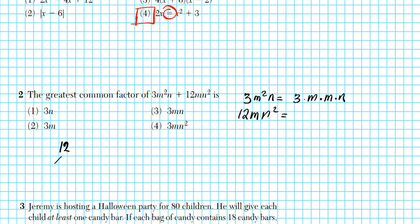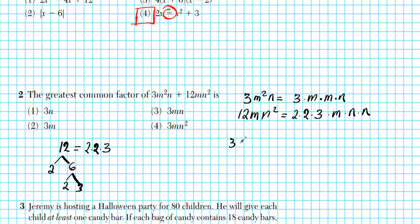Take out a 2 from 12, you're left with 6. Take out a 2 from 6, you're left with 3. So the prime factor decomposition of 12 is 2 times 2 times 3. So 12mn squared can be written as 2 times 2 times 3 times m times n times n. So we have the prime factor decomposition of these two terms written in horizontal orientation: 3 times m times m times n, plus 2 times 2 times 3 times m times n times n.